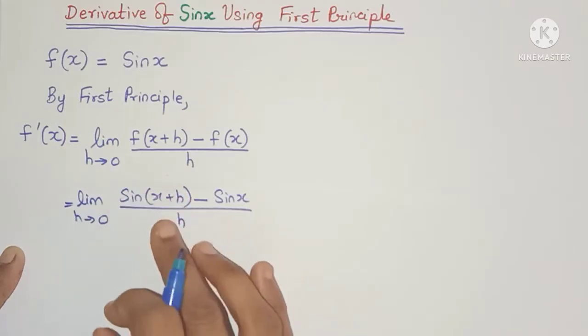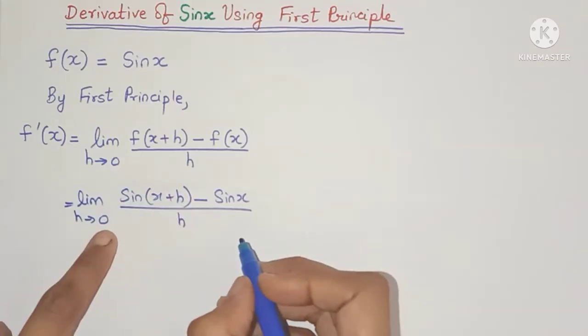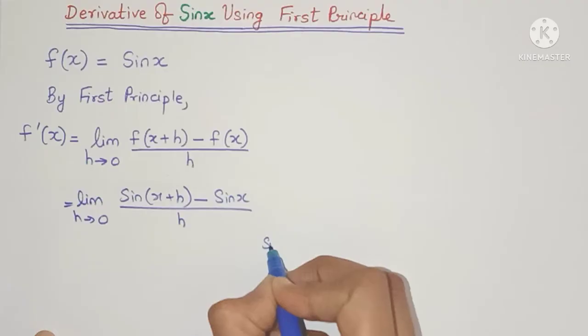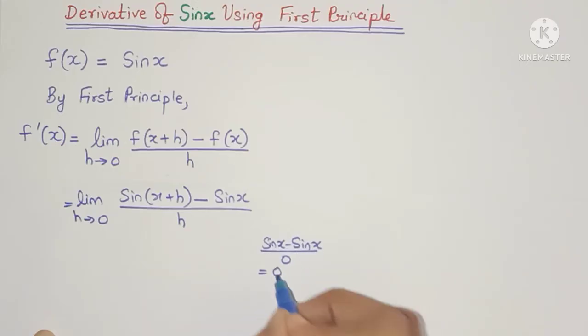Now let's apply the limit over here and see what happens. When I put h tends to 0, I will get sin x minus sin x divided by 0, which is 0 divided by 0. This is an indeterminate form and we have to find a way to remove this 0 by 0 form.